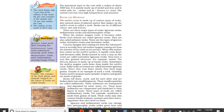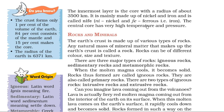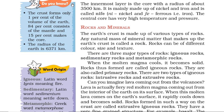The innermost layer is the core with a radius of about 3500 km. It is mainly made up of nickel and iron and is called Nife: Ni for nickel and Fe, that is Ferrous, for iron. The central core has very high temperature and pressure. The crust forms only 1% of the volume of the earth, 84% consists of the mantle, and 15% makes the core.